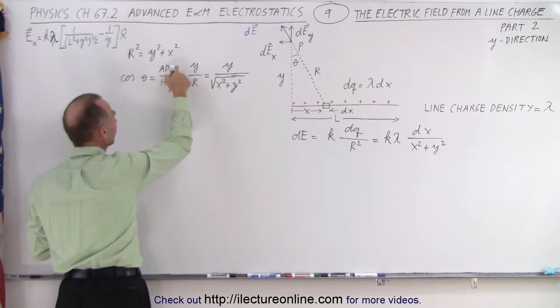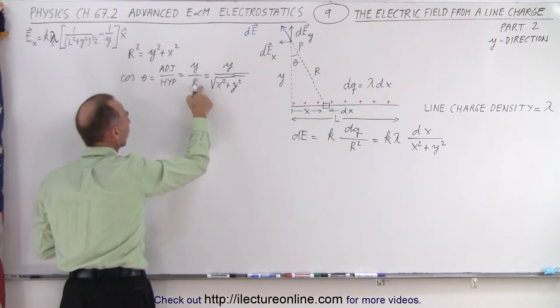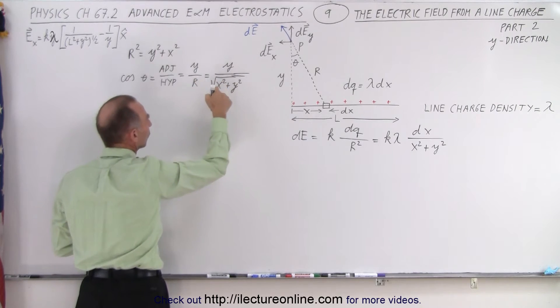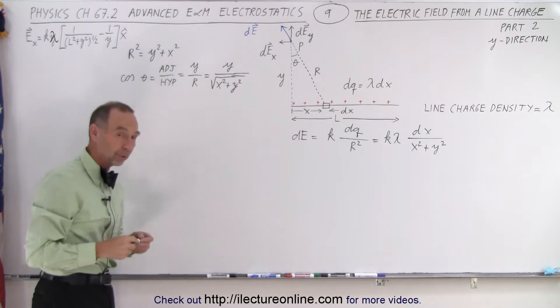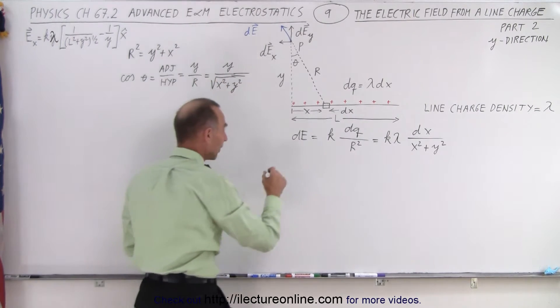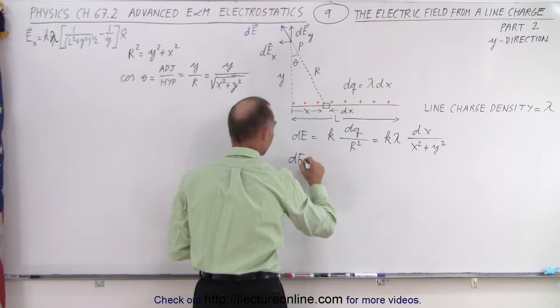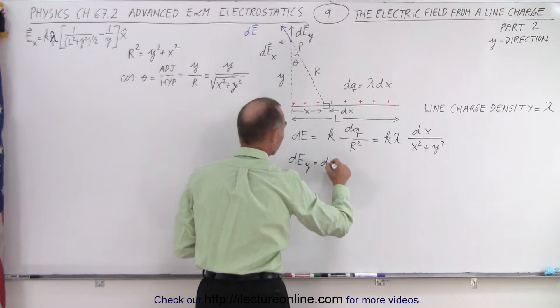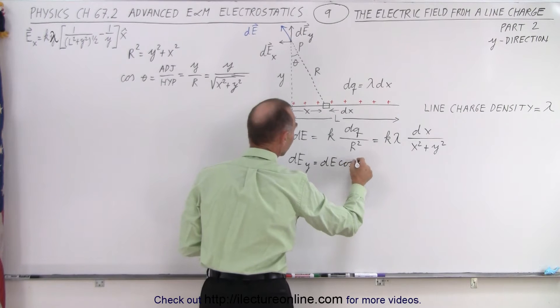The cosine of theta is equal to the adjacent over hypotenuse which is y over r, or in this case y over the square root of x squared plus y squared. So if we want to find dE in the y direction, that's going to be equal to dE times the cosine of theta.